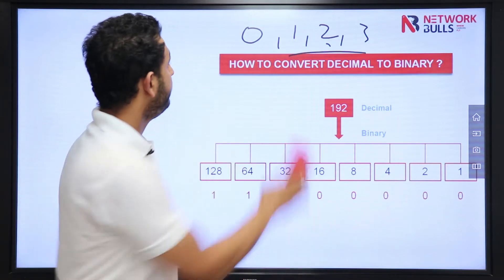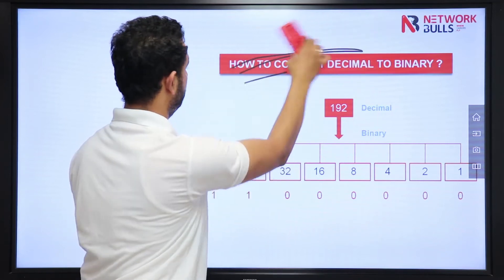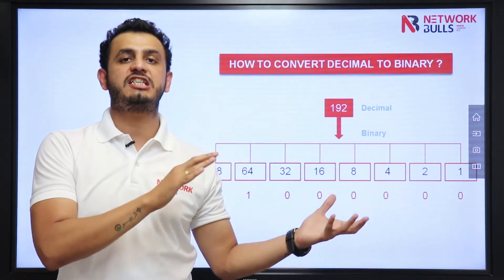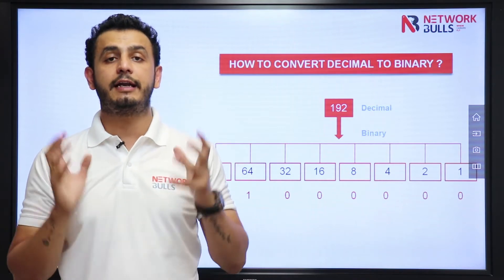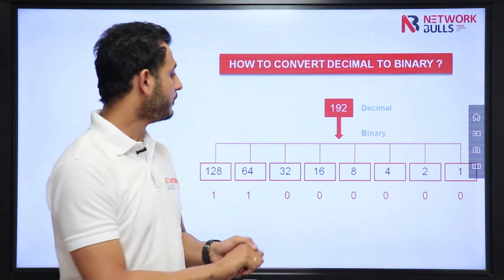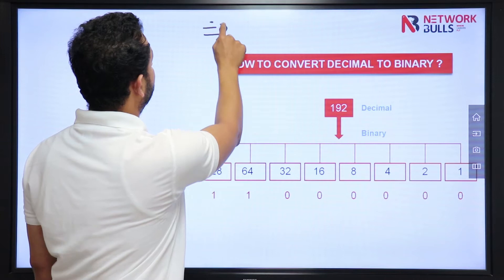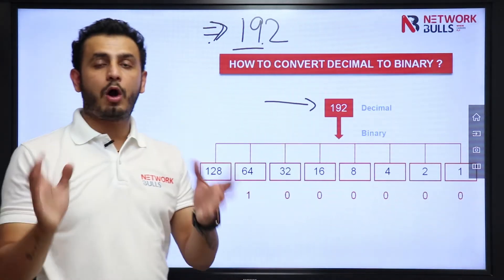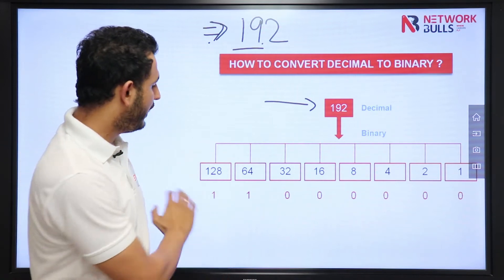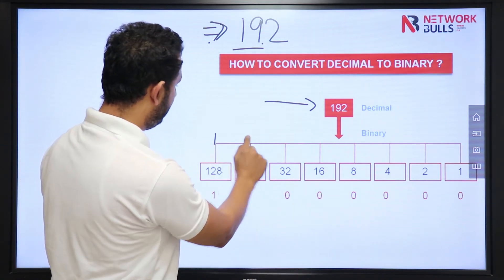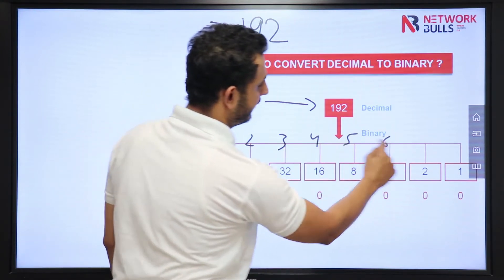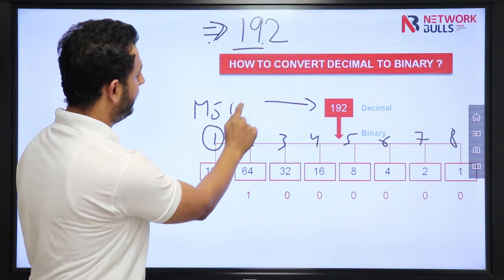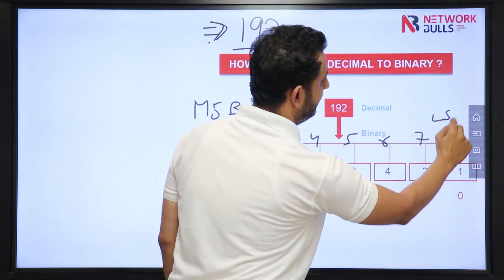Let me give you some examples. Talking about an IP address — in an IP address, as we discussed in the last video, there will be 4 octets, and in each octet there will be 8 bits. So let's say I have the number 192 and I want to write this number in binary. In total I have 8 bits. This is the MSB, most significant bit, and this is the LSB, least significant bit.